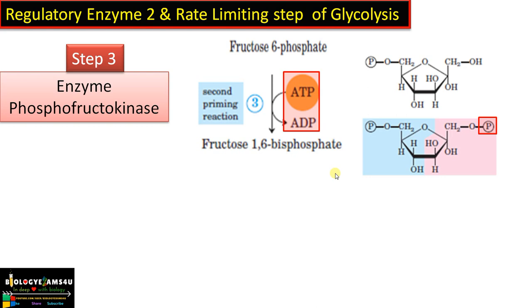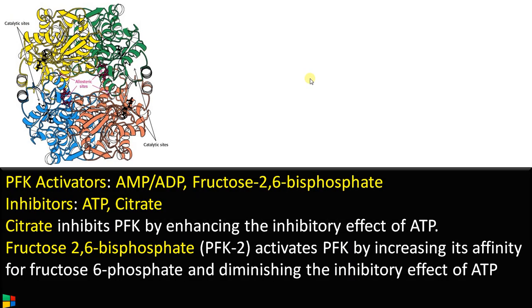Take the case of the first step where glucose is converted to glucose 6-phosphate — in that step, glucose 6-phosphate can enter into gluconeogenesis or the pentose phosphate pathway, among many other pathways. But the PFK reaction is unique to glycolysis, making this the rate limiting step.